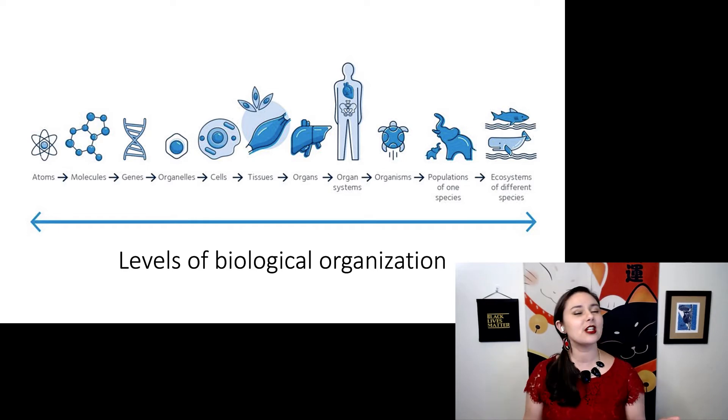Put a couple of different individuals together, now you have a population of a single species. You put different species together, now you have an ecosystem. You can even go farther from this chart and consider the interaction between species and their environment. And then if you put the entire world together, we call that the biosphere.